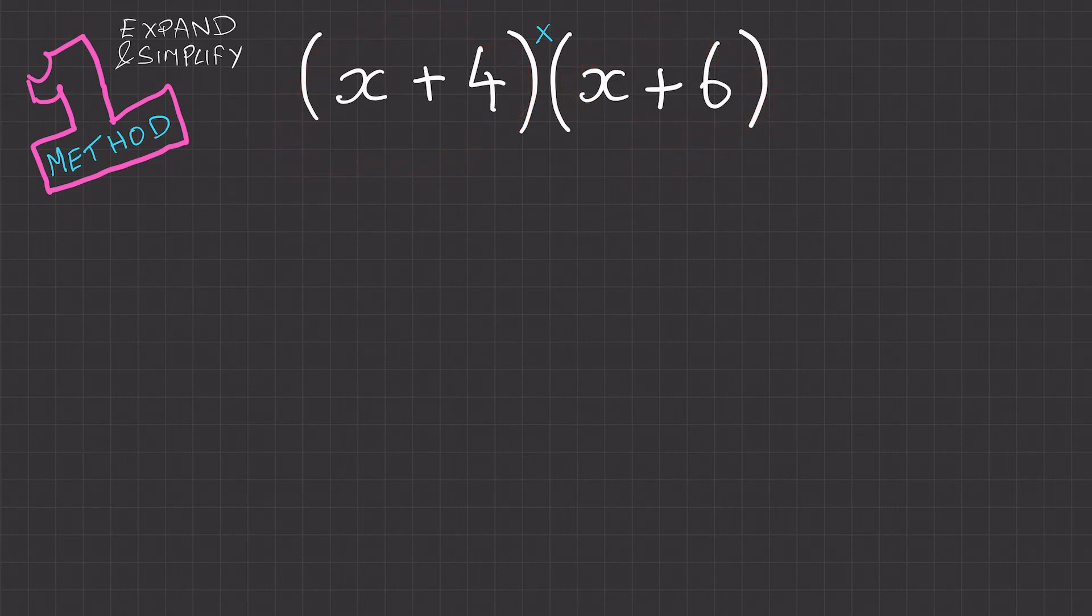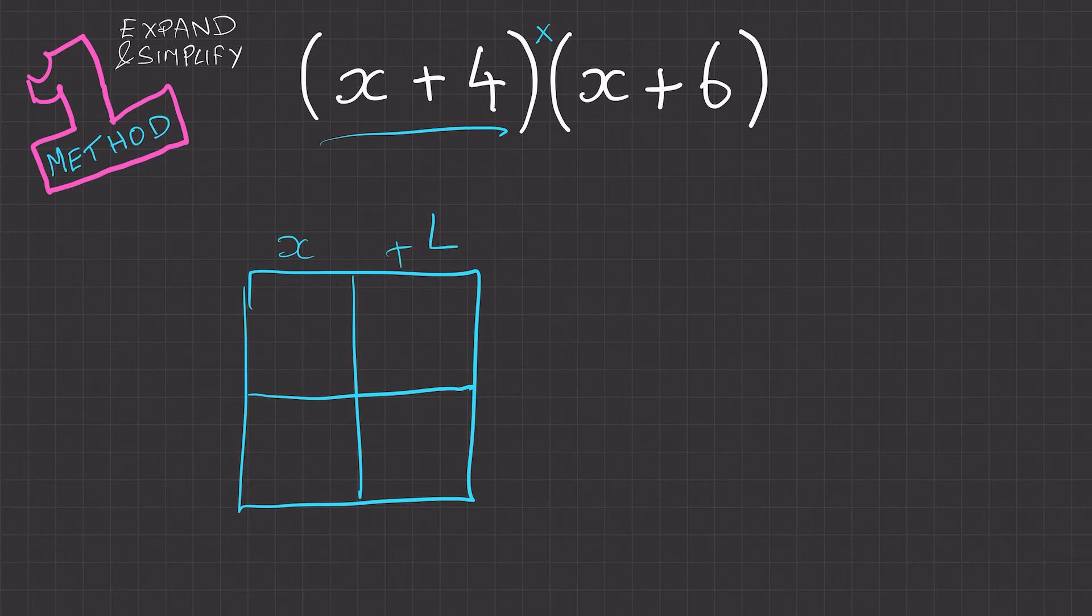So in the grid method we're going to draw out a grid. I'm going to input x plus 4 into the top bit and x plus 6 into the side. So this is basically a multiplication grid.